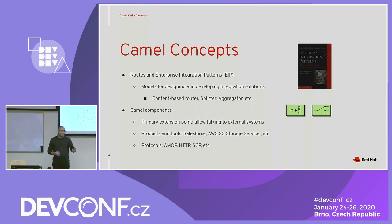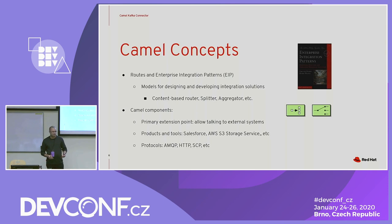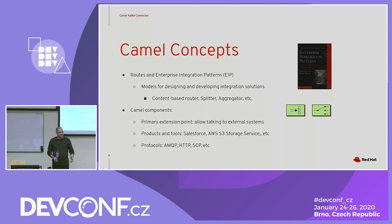For example, Camel has components to talk to Salesforce, AWS S3, AWS SQS, and so on. As well as protocols, for example AMQP, OpenWire, HTTP, FTP, and so on.